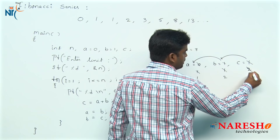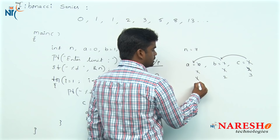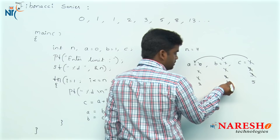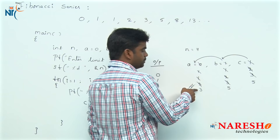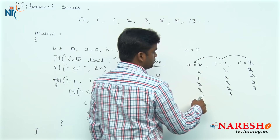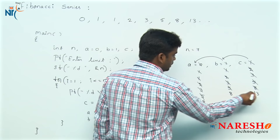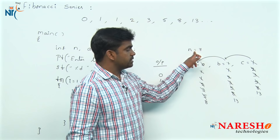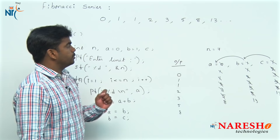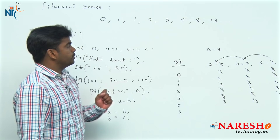This process continues: 1 plus 2 gives c equals 3. Next, b value 2 is stored into a, and c value 3 is stored into b, so it prints 2. Then 2 plus 3 is 5, same story — 3 comes into a, 5 into b, prints 3. Then 3 plus 5 is 8, prints 5. Then 5 plus 8 is 13, prints 8. So for the first 7 elements: 0, 1, 1, 2, 3, 5, 8. This is how to print N elements of the Fibonacci series in C.